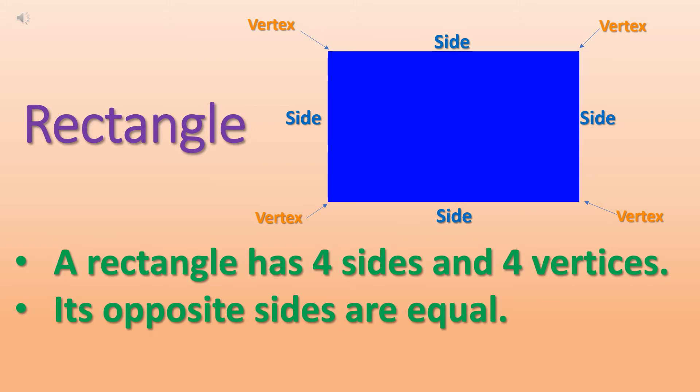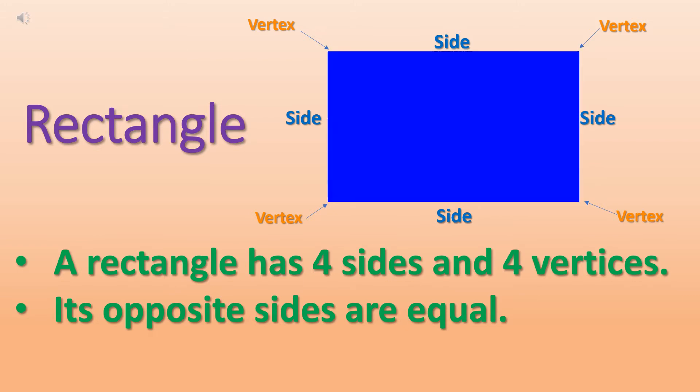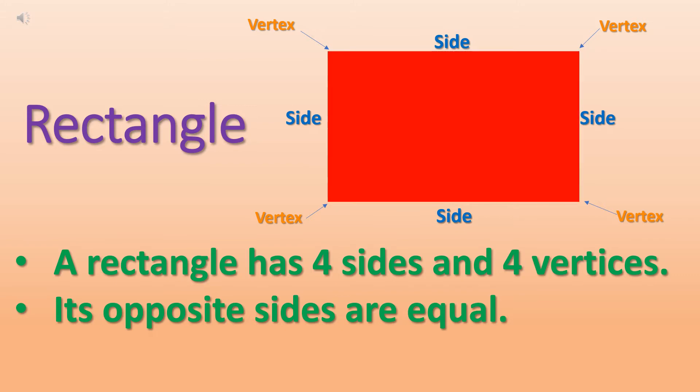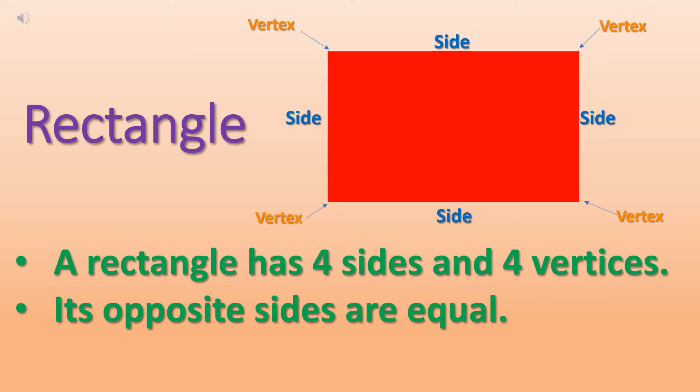Children, singular form of vertices is vertex. Plural is vertices, singular is vertex. When we have 1 corner, it is called 1 vertex. And when you have 2 or more corners, those are called vertices.